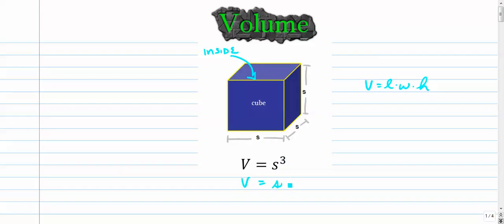So side to the third power is the same as multiplying it by itself three times. Be careful not to do this: three times s. That's not the same. It's side times side times side.